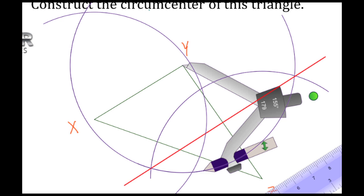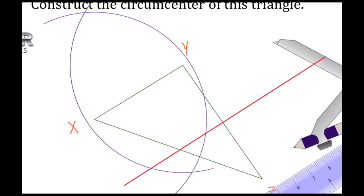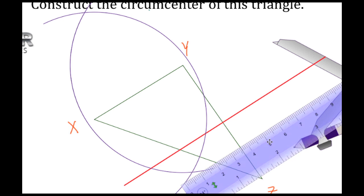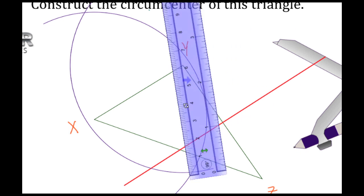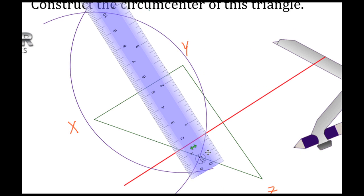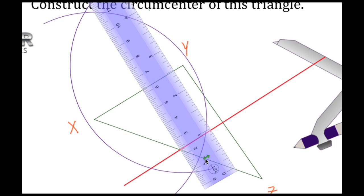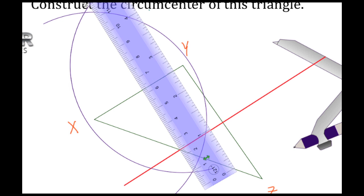Let me go ahead and clean up some of this so it'll be a little bit easier to see what's going on. Let's get rid of that arc and that arc. Now we can see the intersection point up here and down here.